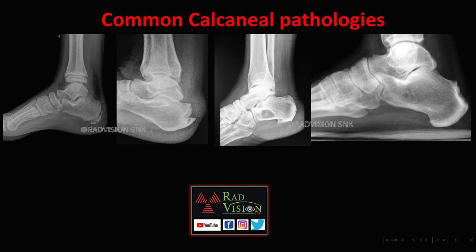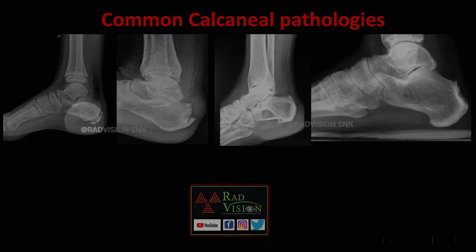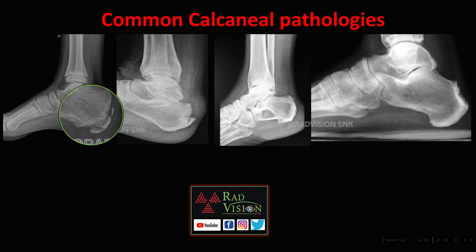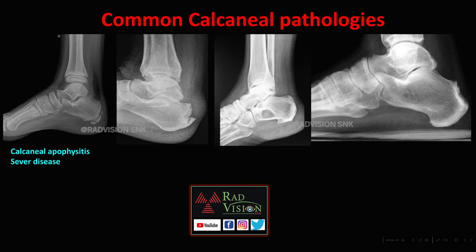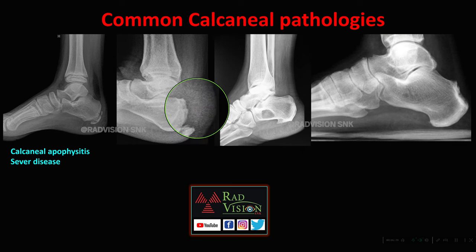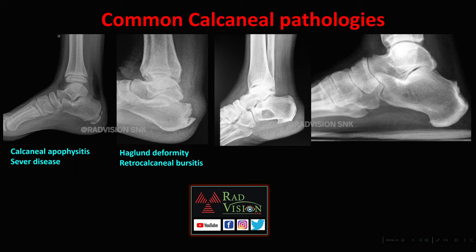Next, common calcaneal pathologies: fragmentation and sclerosis of the apophysis of the calcaneum is calcaneal apophysitis or Sever's disease. A bone spur arising from the posterosuperior aspect of the calcaneum with retrocalcaneal bursitis is Haglund deformity with retrocalcaneal bursitis.